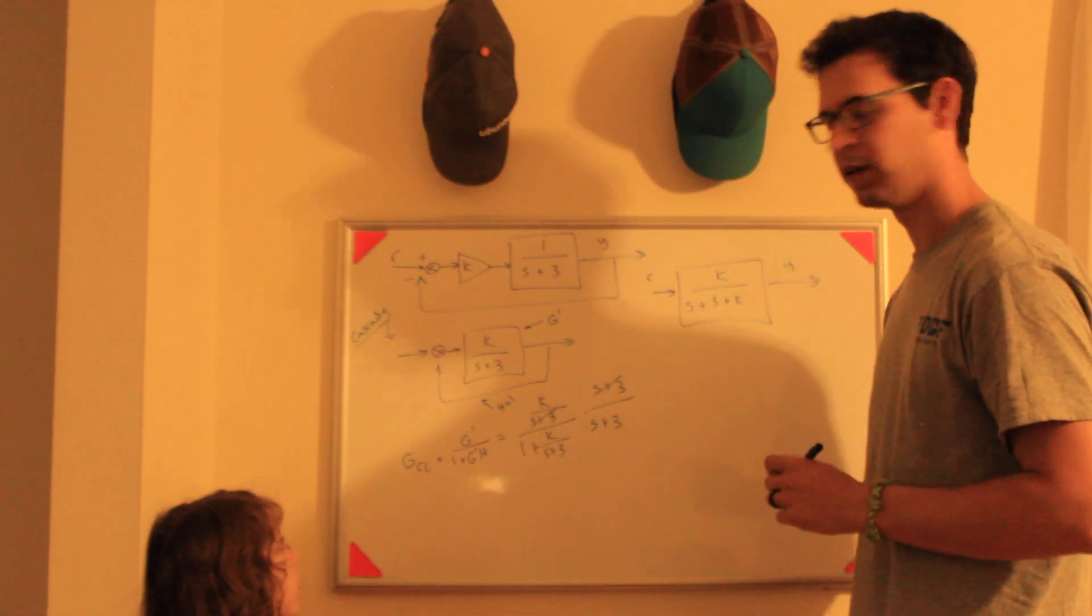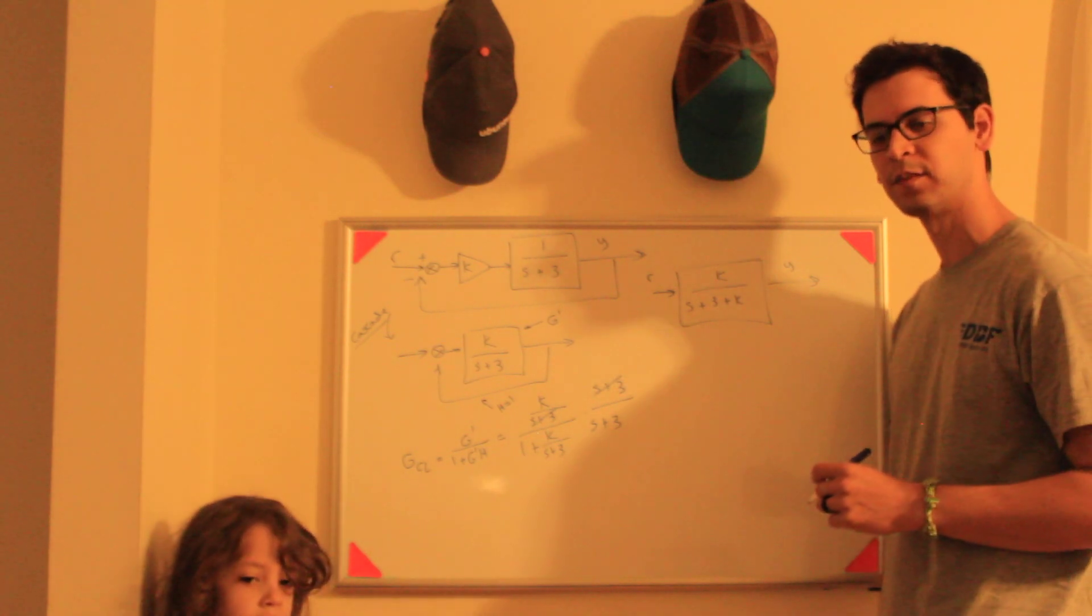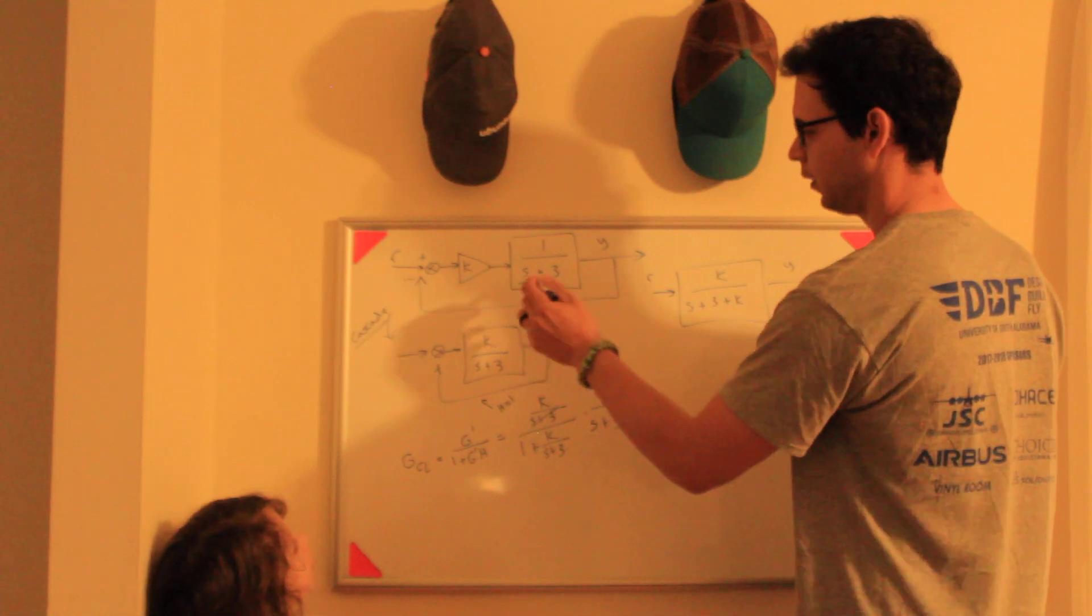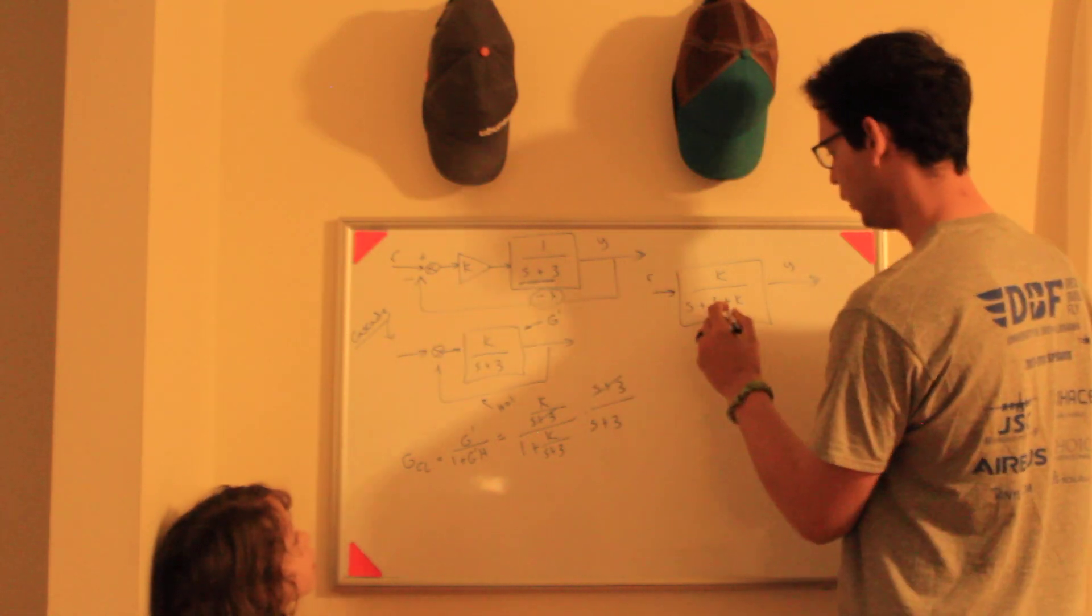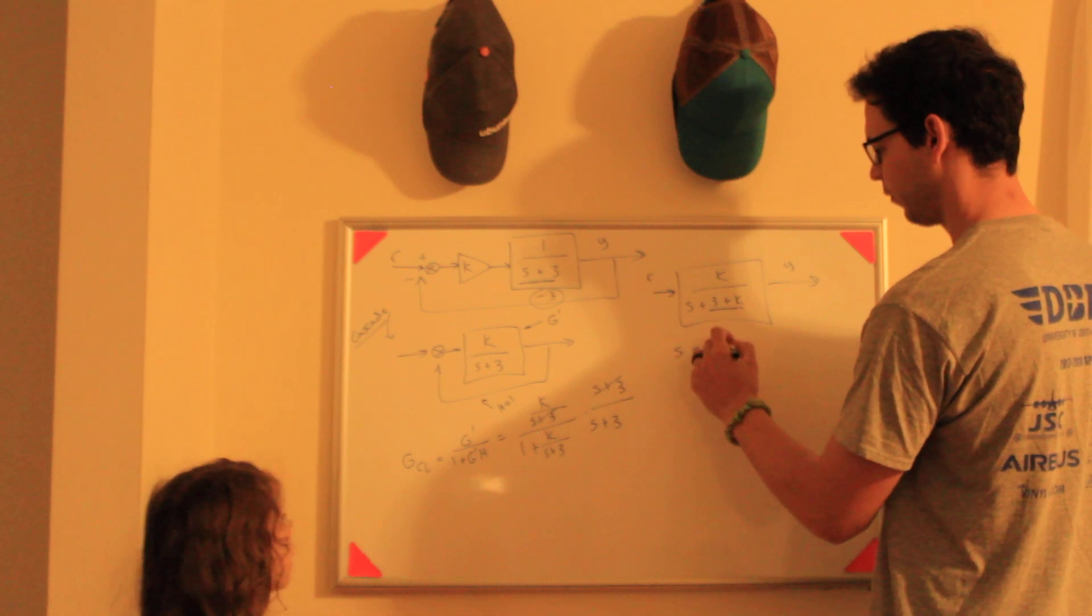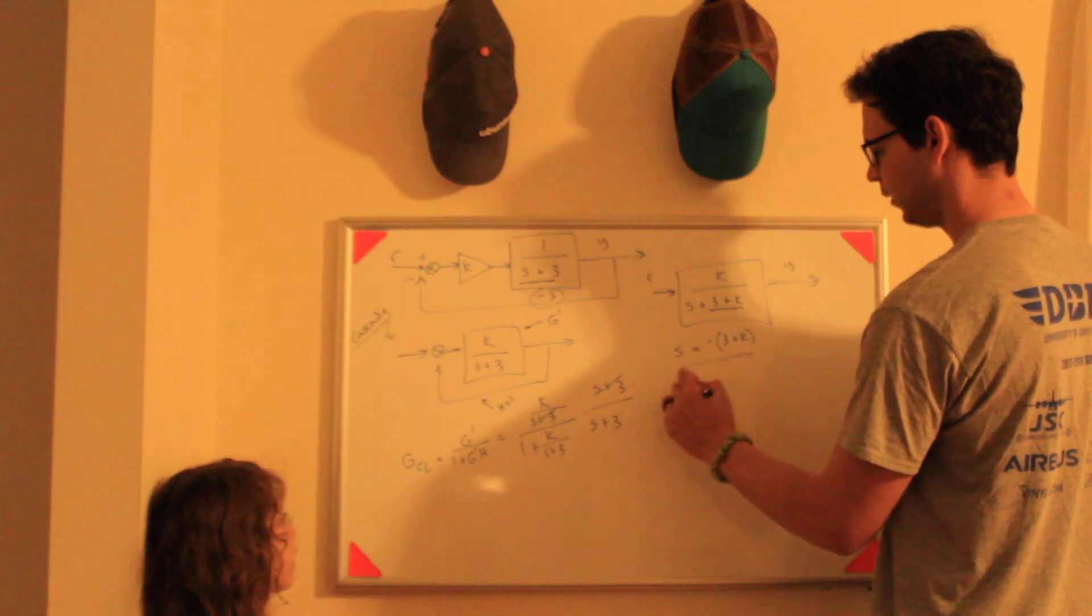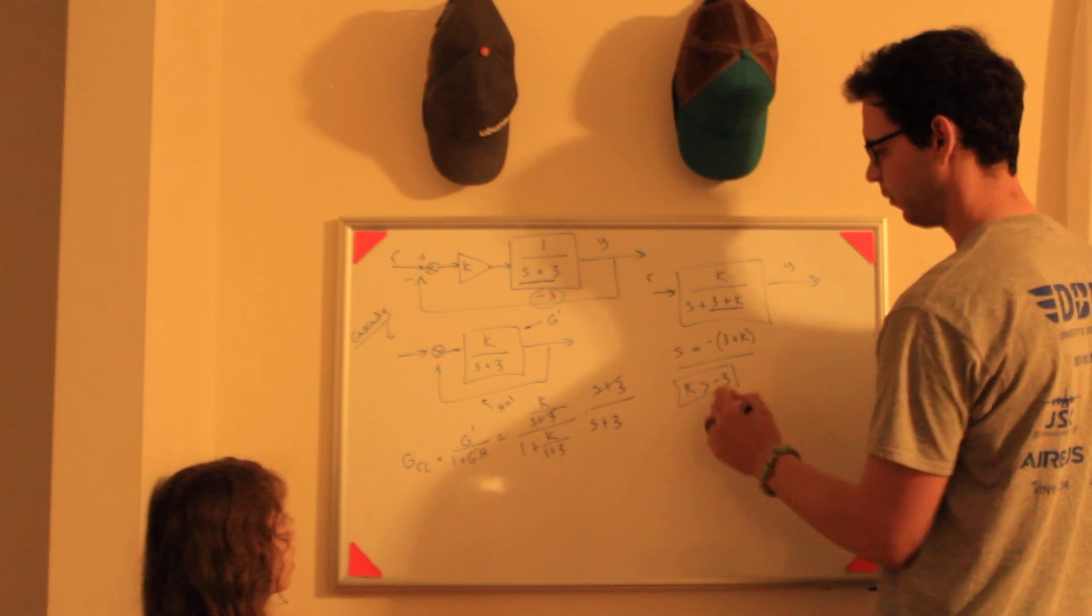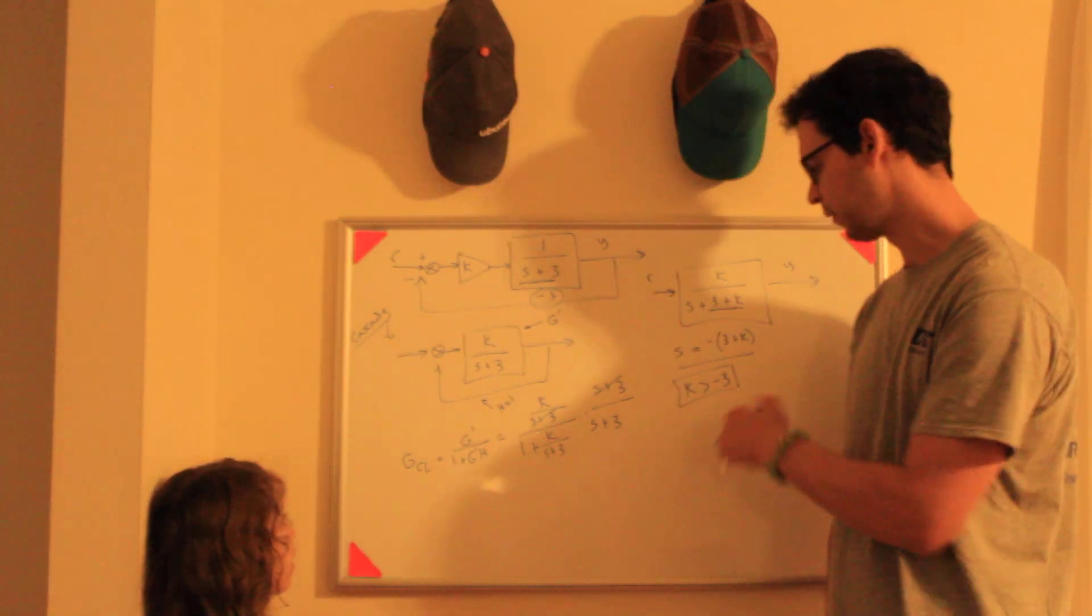This is my closed-loop system. If you notice, open loop I've got one pole at negative 3, so that's stable. In closed loop, my pole is at negative 3 plus K. So as long as K is greater than negative 3, my system is stable.